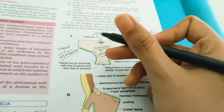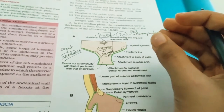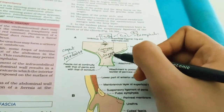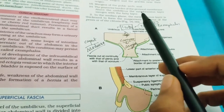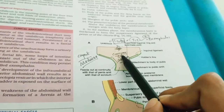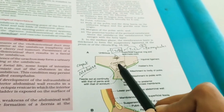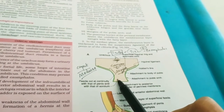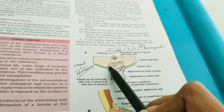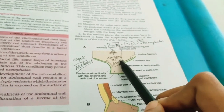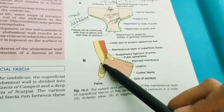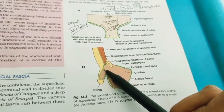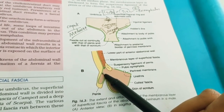The various contents of the superficial fascia run between these two layers — Camper and Scarpa. The fatty layer, Camper, is continuous with the superficial fascia of adjoining parts of the body. Notably, in the penis, the superficial fascia is devoid of fat, so the superficial Camper layer is absent there.